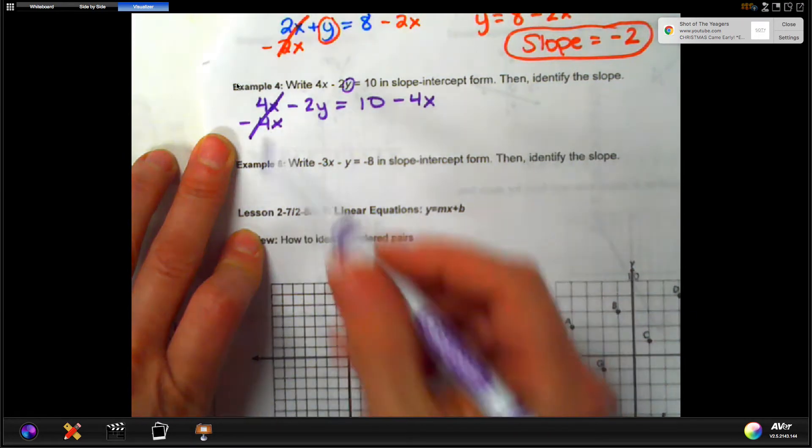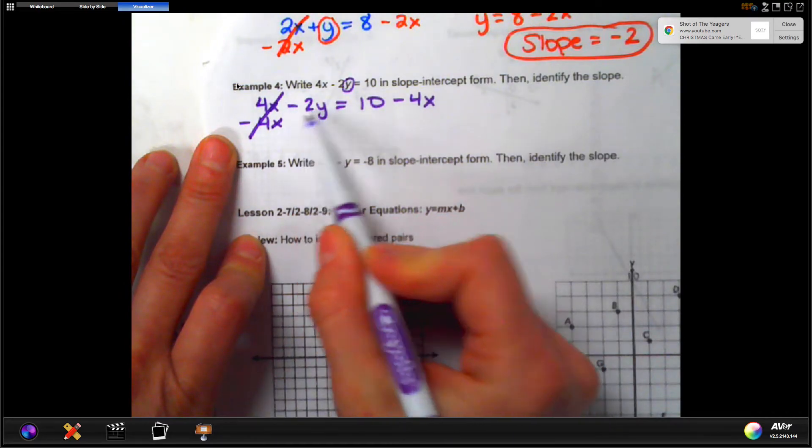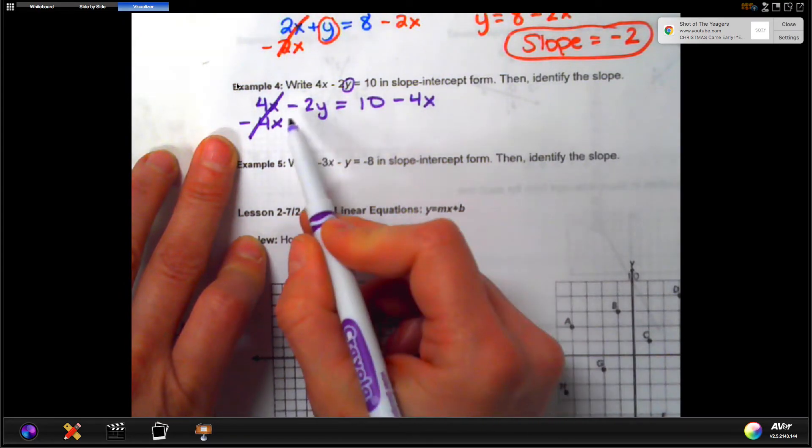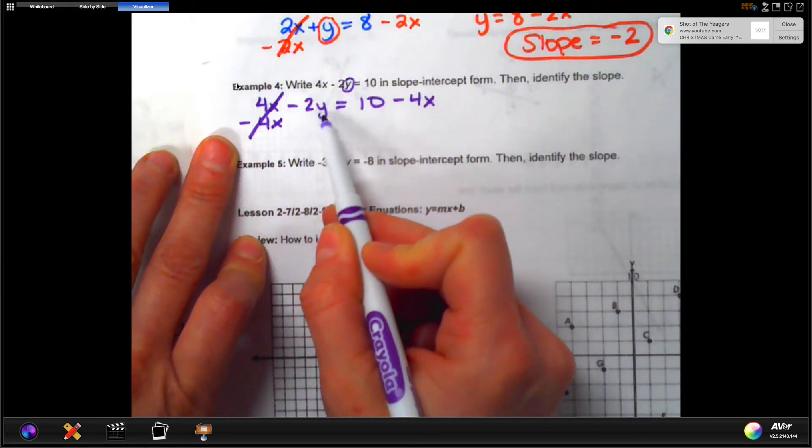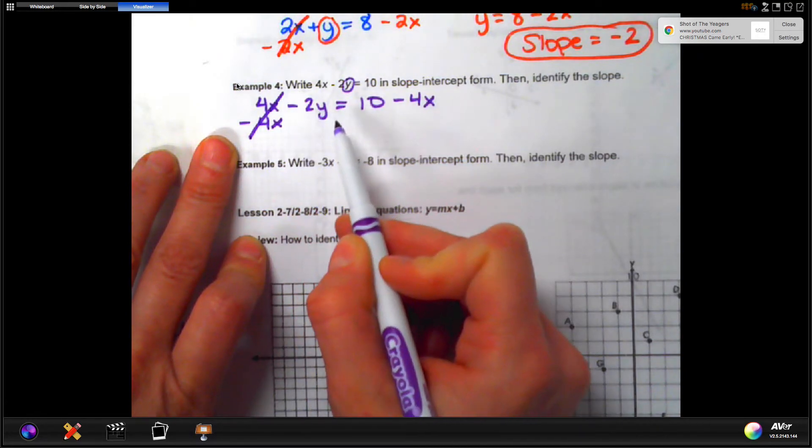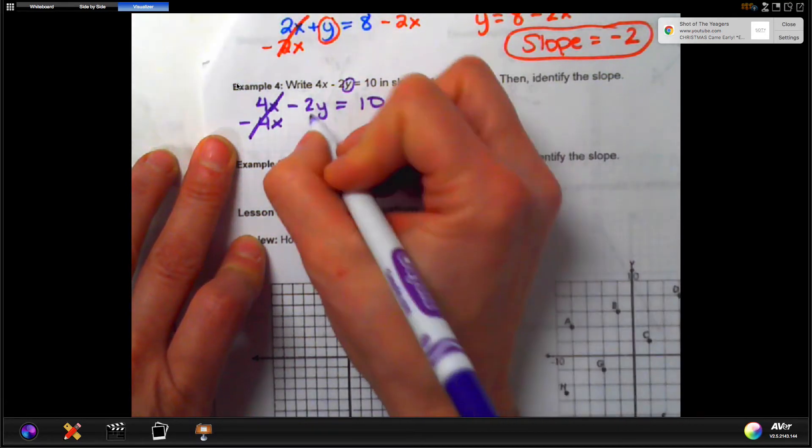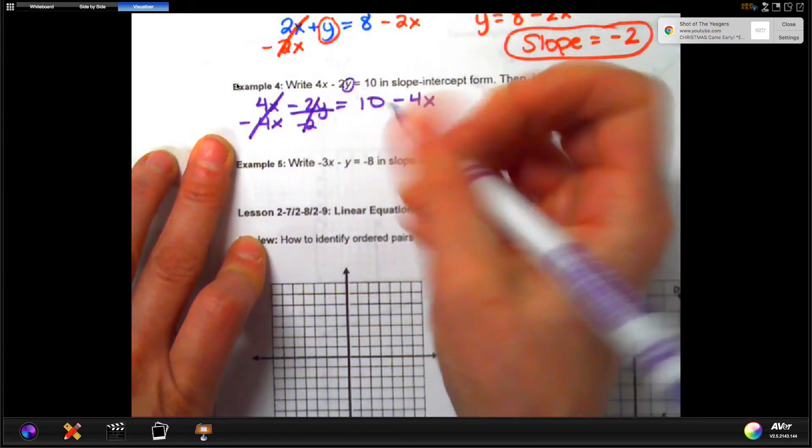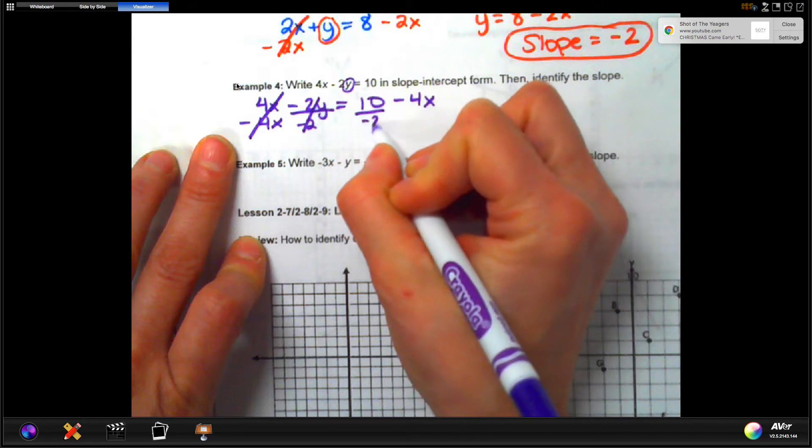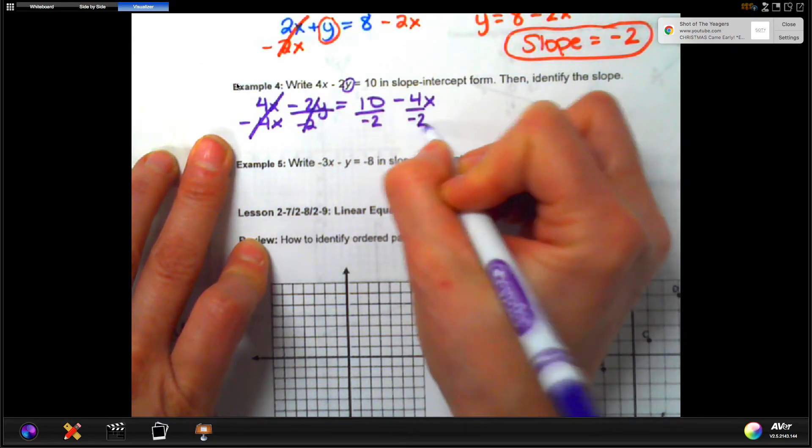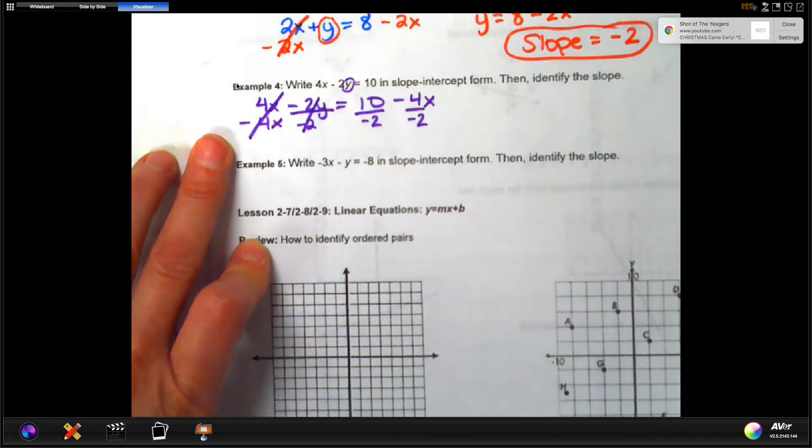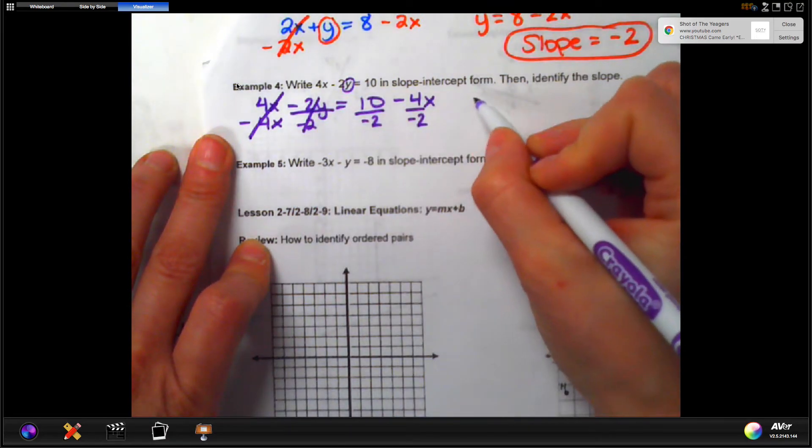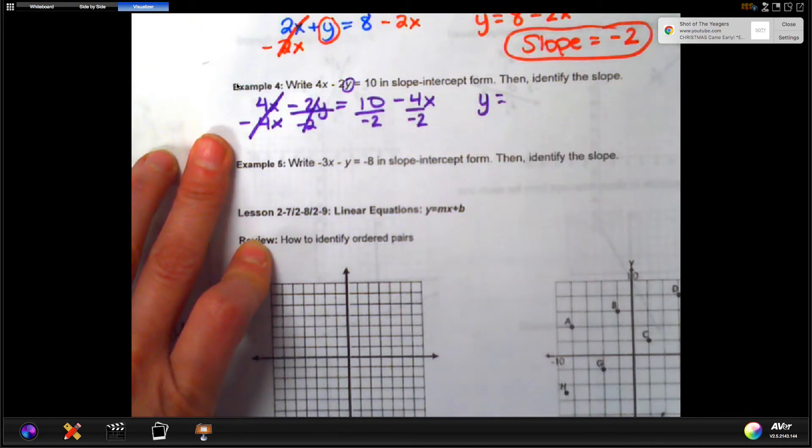Now, the other thing that has to get out of there is going to be this negative 2. Remember that negative 2y means negative 2 times y. So, to undo that, we have to divide by negative 2, and we now have to divide each of these terms on the other side by negative 2. So let's rewrite the equation. The only thing left on the left side is y. That's what we want.